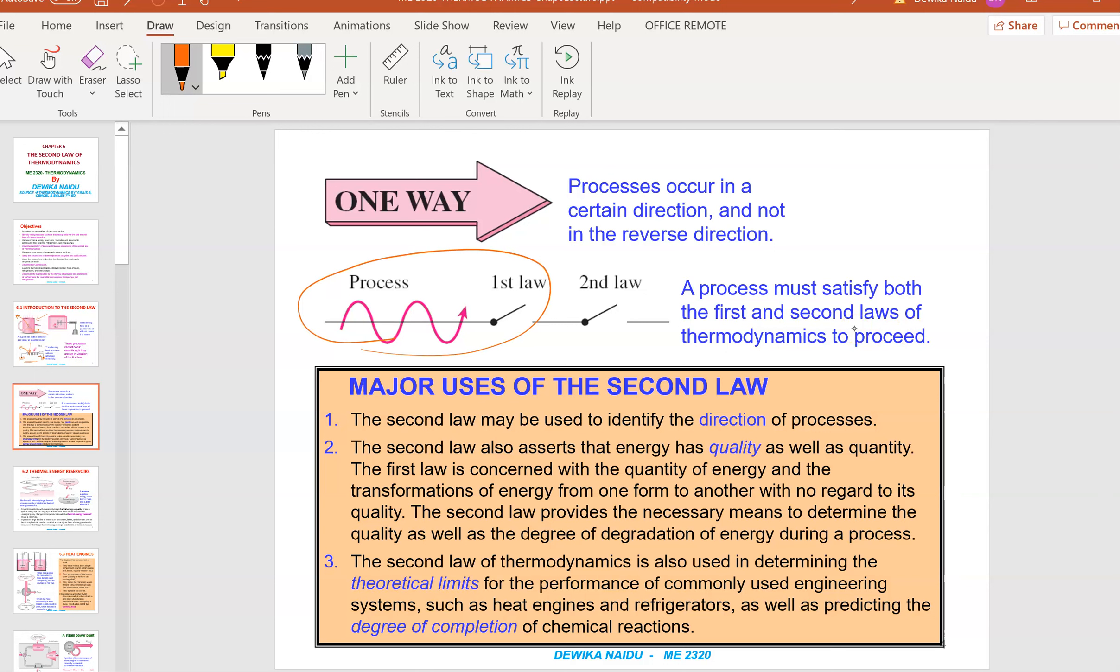First law always talks about the quantity and the second law talks about the quality. Major uses of the second law: First, the second law may be used to identify the direction of processes, and the second law may also assess energy's quality as well as quantity. The first law is concerned with the quantity of energy and the transformation of energy from one form to the other with no regard to its quality, whereas the second law provides the necessary means to determine the quality as well as the degree of degradation of energy during the process.